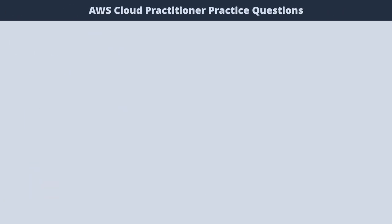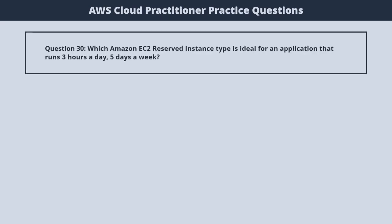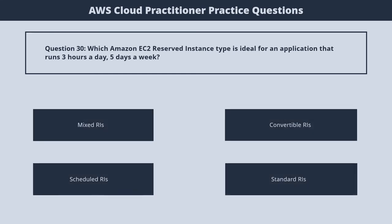Question 30. Which Amazon EC2 reserved instance type is ideal for an application that runs 3 hours a day, 5 days a week? 1. Mixed RIs. 2. Convertible RIs. 3. Scheduled RIs. 4. Standard RIs. The correct answer is 3. Scheduled RIs.